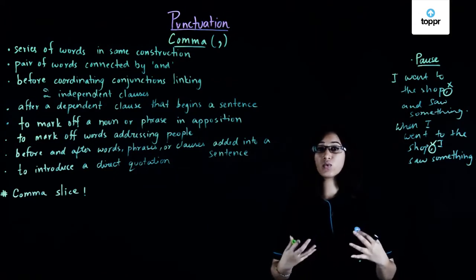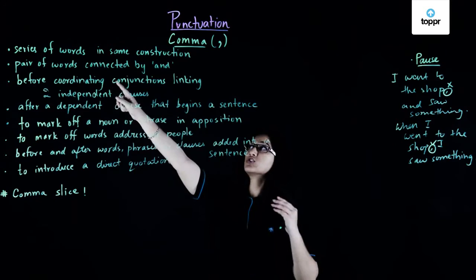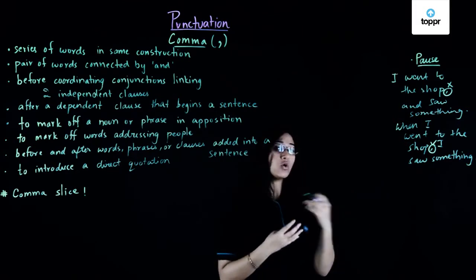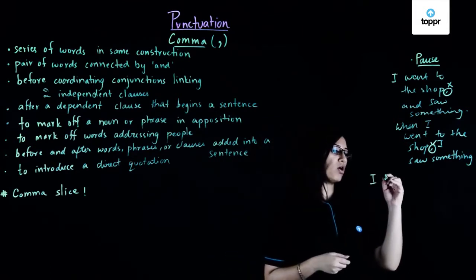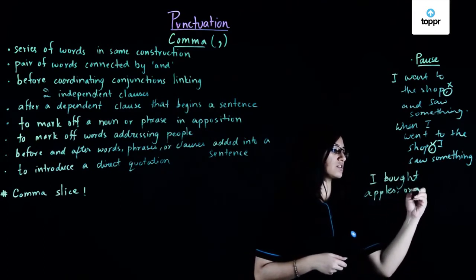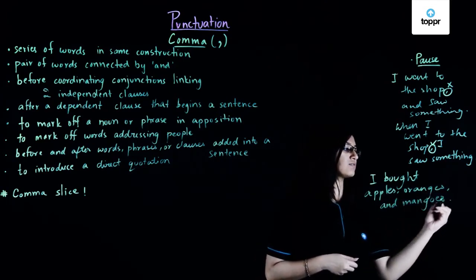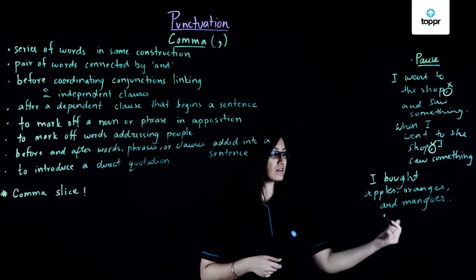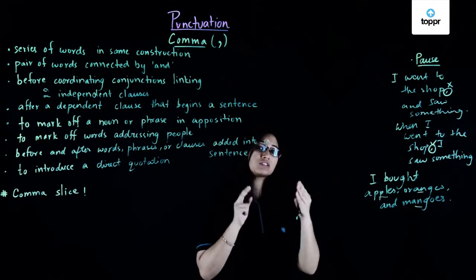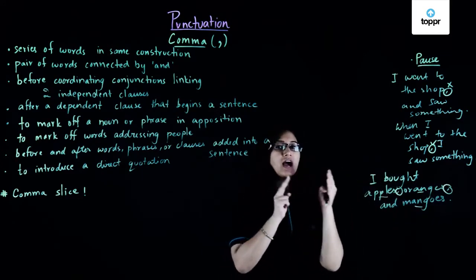Now let's take a look at the various different ways that we use the comma. Number one, we use it between words which are in a series and which are in the same construction. Whenever you have a list, for example: 'I bought apples, oranges and mangoes.' In this sentence I have three items placed in a list — apples, oranges and mangoes — and in order to separate the items in a list, I have made use of the comma between each item.